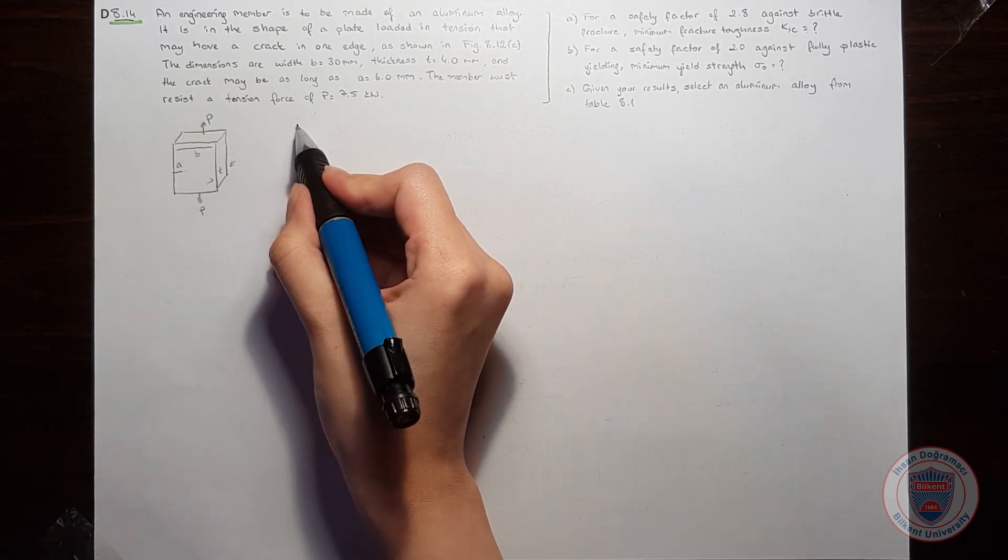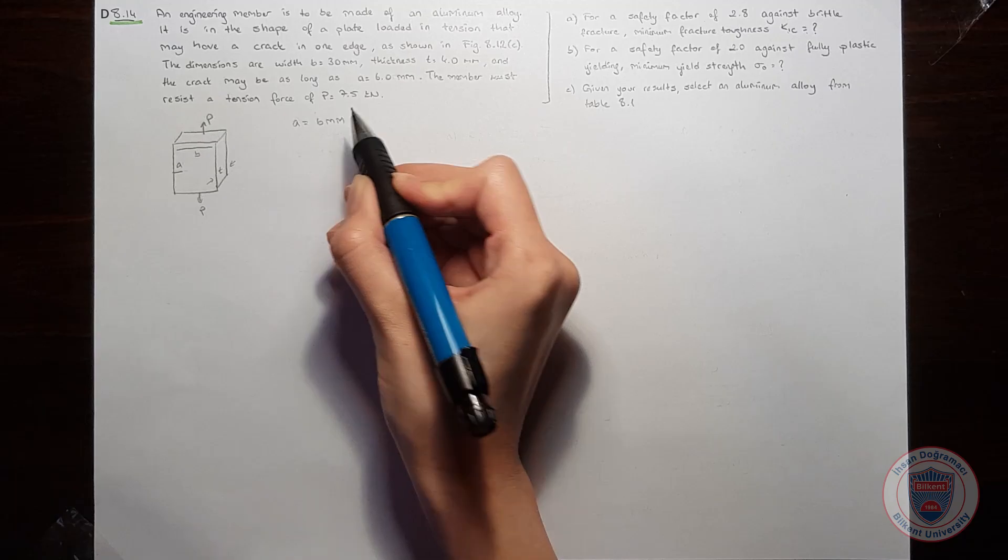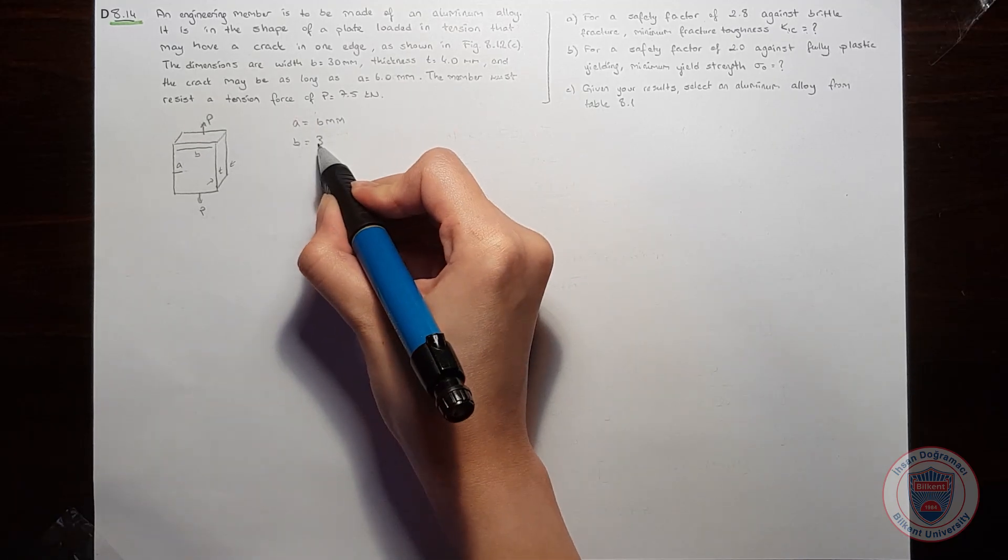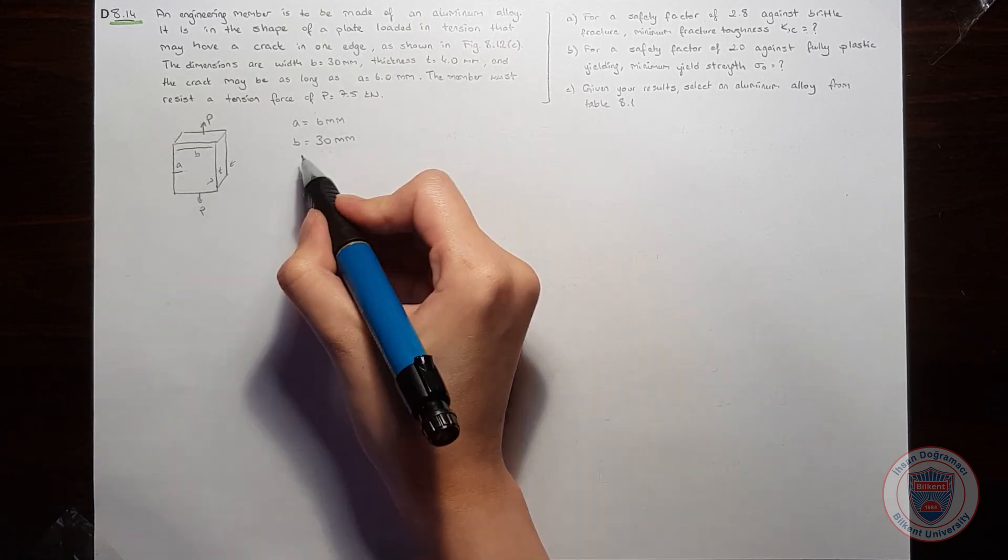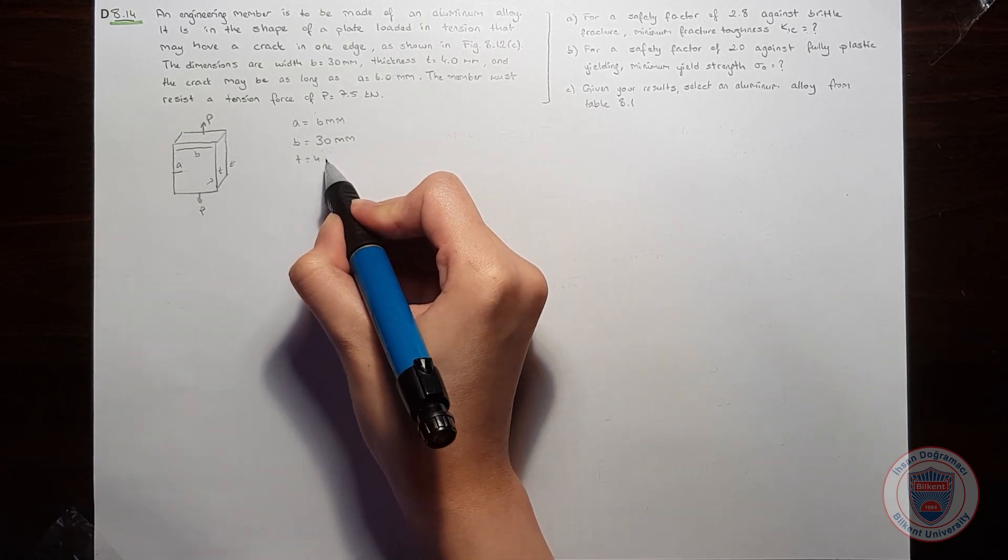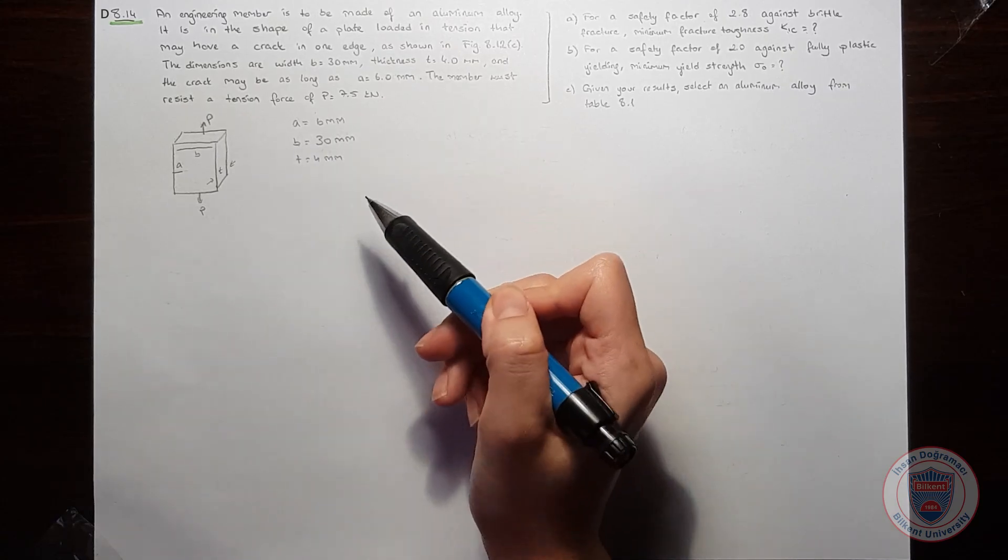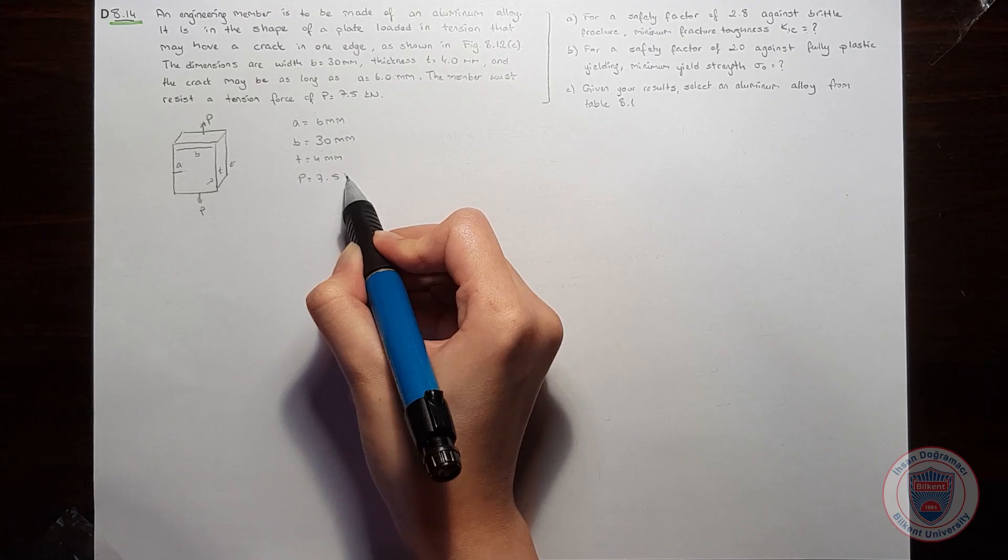We know that the crack size is 6 mm. The width B is 30 mm, and the thickness is 4 mm. And we know that it must resist a tension force which is 7.5 kN.